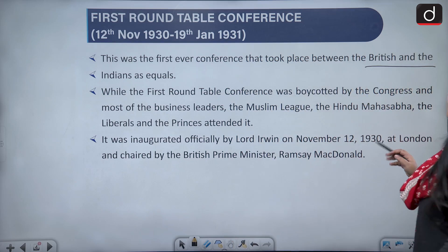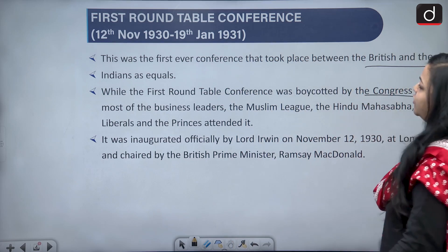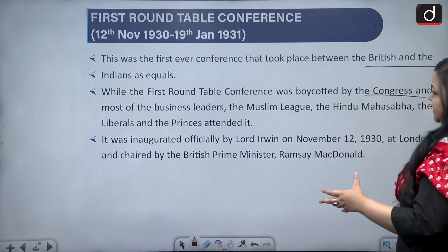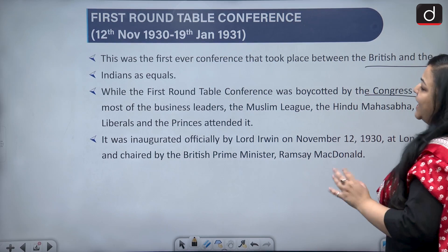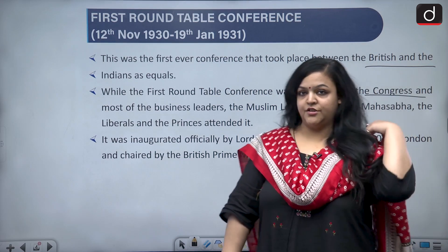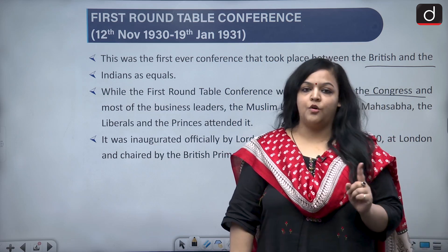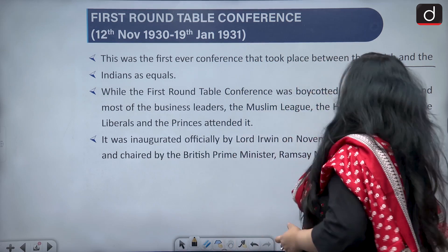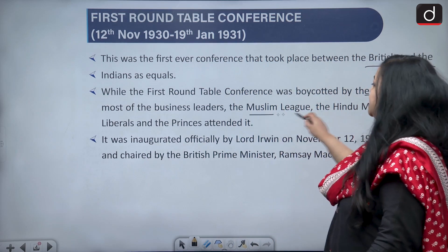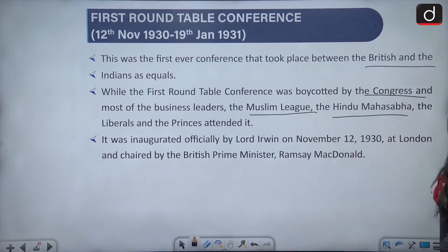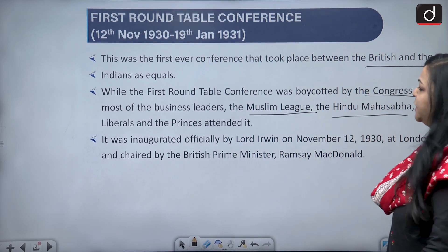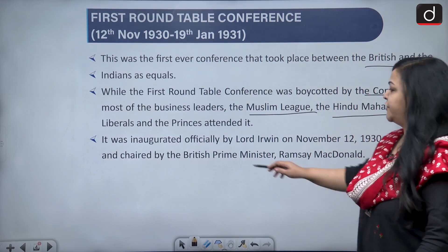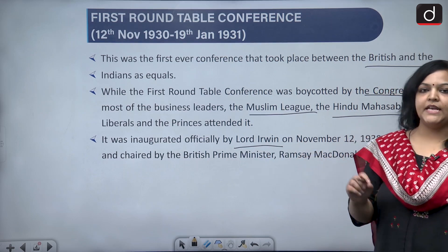The First Round Table Conference was mostly boycotted by Congress. However, most of the business leaders, Muslim League, Hindu Mahasabha, the Liberals, and the Princes did attend it. So even though Congress was boycotting this entire conference, there were others who attended — the Muslim League, Hindu Mahasabha, the Liberals, and the Princes.